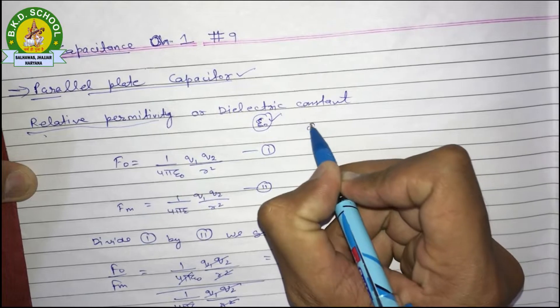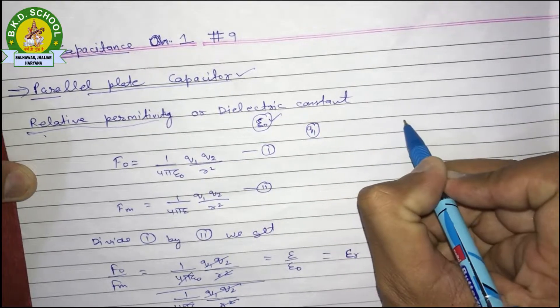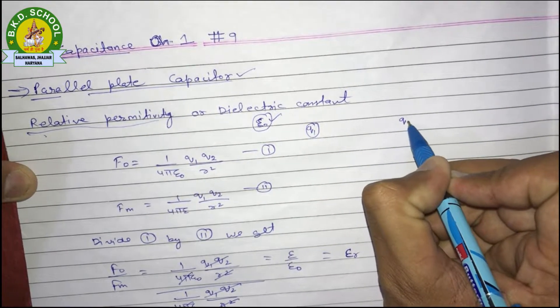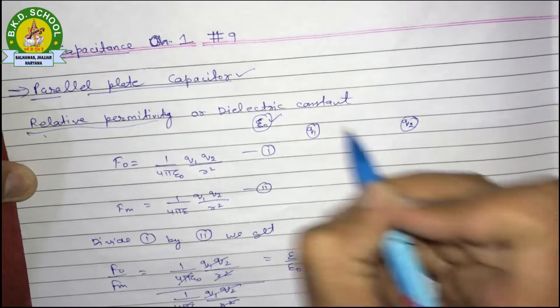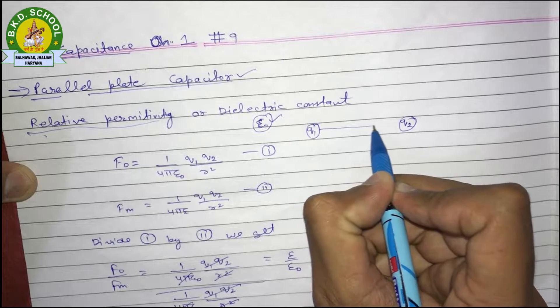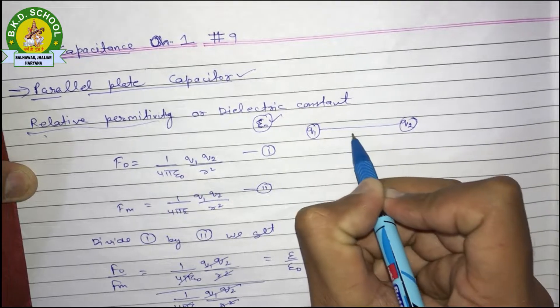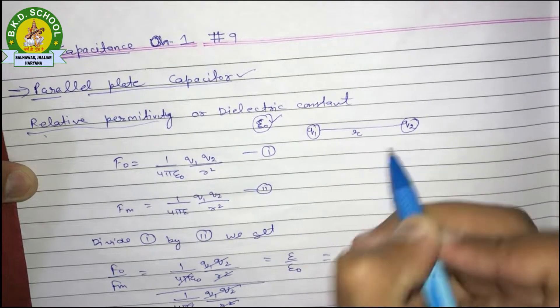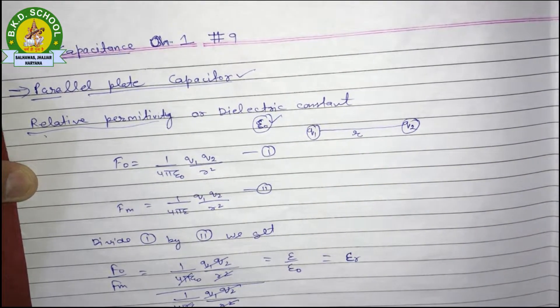Let us suppose that we have two charges of magnitude q1 and q2, and they are separated by a distance named r.